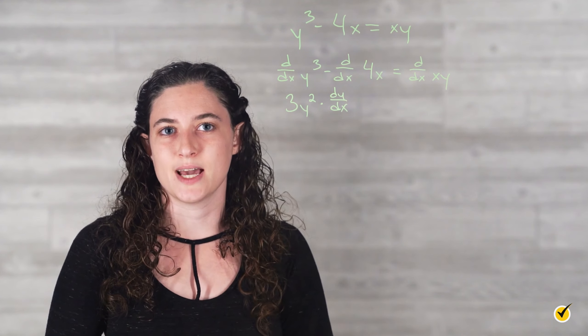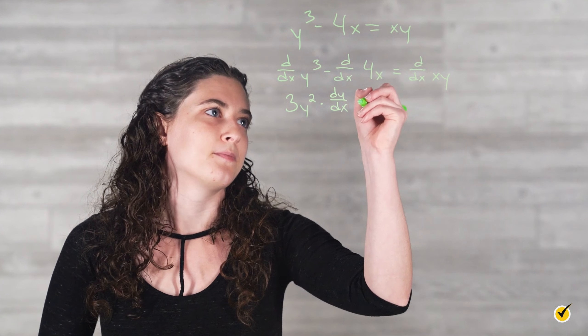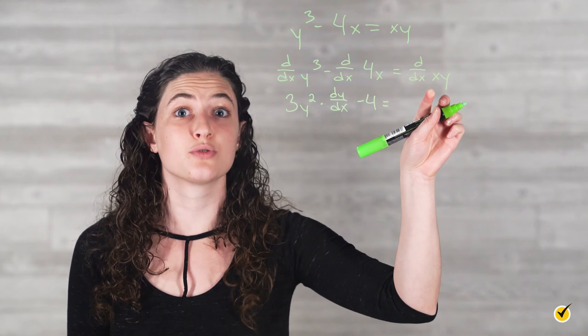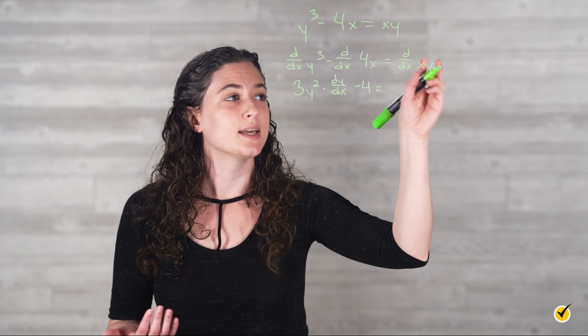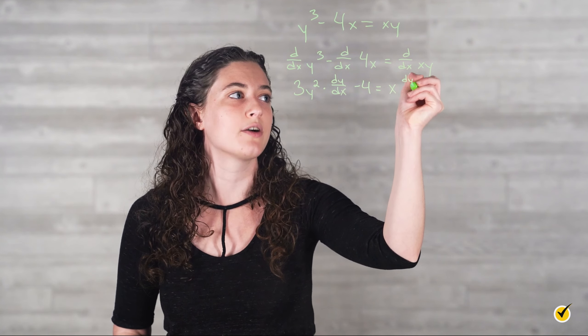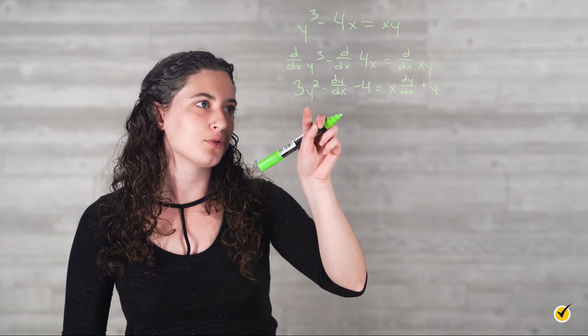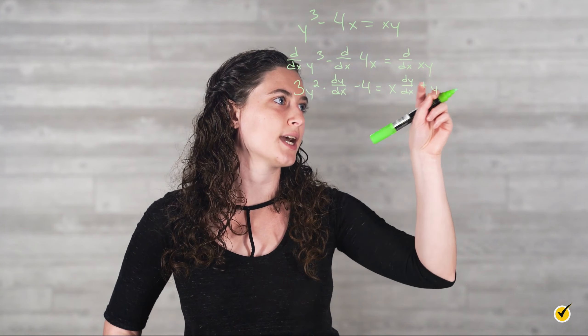Let's take the derivatives of the other terms now. The derivative of negative 4x with respect to x is, of course, minus 4. And then on the right side, the derivative of xy with respect to x can be found using the product rule. First times the derivative of the second gives us x times dy over dx, plus second times the derivative of the first, so we'll get y times 1, which is just y. So putting everything together, we now have 3y squared dy over dx minus 4 is equal to x dy over dx plus y.